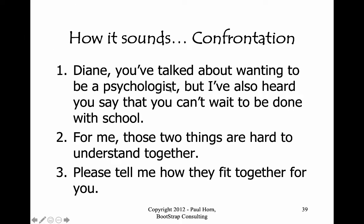There is a bit of a challenge with this phrasing, and you can see why we need a relationship because there's a 'but' there. Even if I took the 'but' out, it's still going to sound like a bit of a confrontation. So it might sound like: 'Diane, you've talked about wanting to be a psychologist. I've also heard you say that you can't wait to be done with school.' The 'for me' is a substitute for an I-statement. 'I have a hard time understanding how those two things fit together. Please tell me how they fit together for you.'